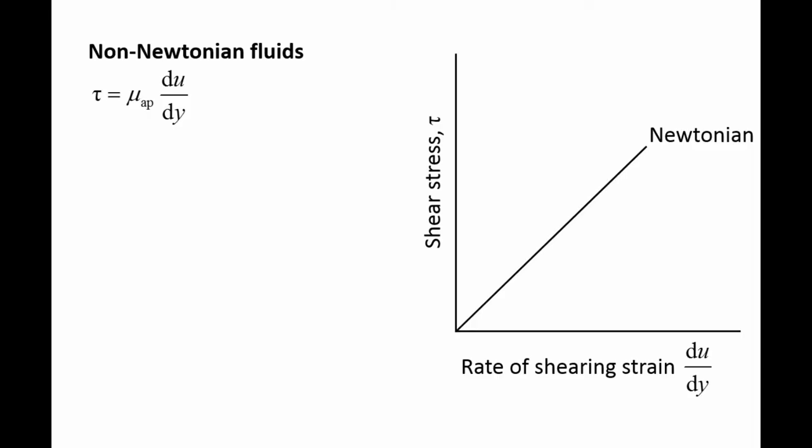The apparent viscosity is the resistance to deformation at a given shear stress. The viscosity of pseudoplastics, sometimes called shear thinning fluids, decreases with increasing applied shear stress. Notice that the slope is relatively high at small shear stresses and decreases as the shear stress gets larger.